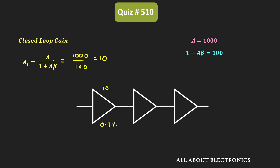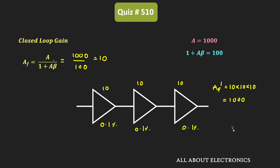Three such feedback amplifiers have been cascaded, and we need to find the overall gain and overall gain stability. For each feedback amplifier, the gain is 10 and the gain stability is 0.1%. Since all three amplifiers are cascaded, the overall gain is the product of individual gains: AF' = 10 × 10 × 10 = 1000. The overall gain stability is the sum of individual gain stabilities: 0.1% + 0.1% + 0.1% = 0.3%.